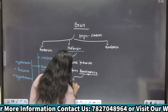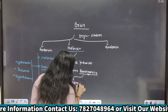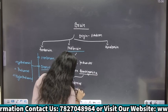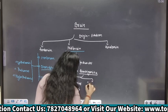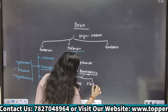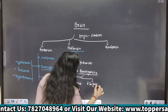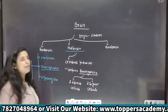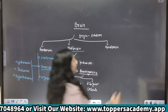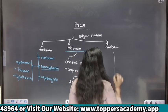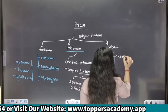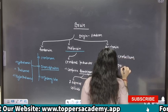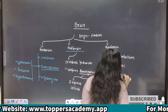Corpora quadrigemina — quadri se aap kya samajhte ho? Four. So isme kya hongi? Two superior colliculi and two inferior colliculi. Hindbrain mein kya kya hota hai: cerebellum — the second largest part of brain — then pons, then medulla.